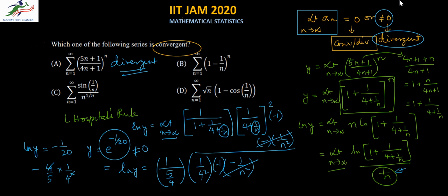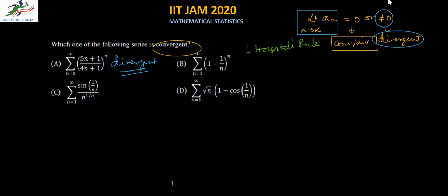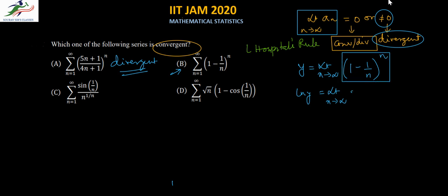Next we go to option B. We follow the same approach: y equals the limit as n tends to infinity of (1 − 1/n) to the power n. Taking log: ln y equals the limit as n tends to infinity of n · ln(1 − 1/n), which can be rewritten as ln(1 − 1/n) over 1/n.